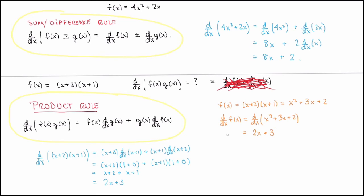Note that this is definitely not the product of the derivatives. For (x+2)(x+1), the derivative of (x+2) is 1 and the derivative of (x+1) is 1, so the product of the derivatives would be 1 — which is certainly not equal to 2x+3. So again, never do that when you have the derivative of a product; you need to use the product rule.